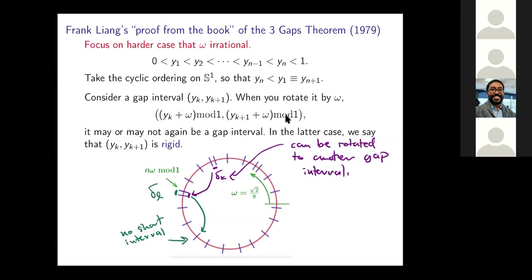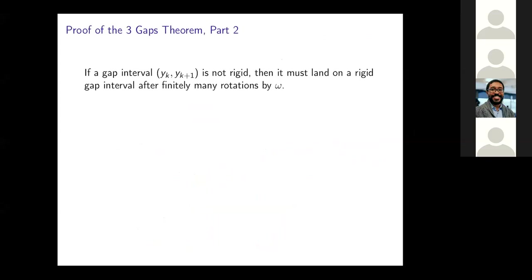If they don't tell you, then you don't believe it's impossible, and you prove it. So I claim that if you have a gap interval that's not rigid — meaning you can rotate it by omega and get another gap interval — then after finitely many of these rotations by omega, it has to become rigid. You cannot keep rotating it infinitely many times.